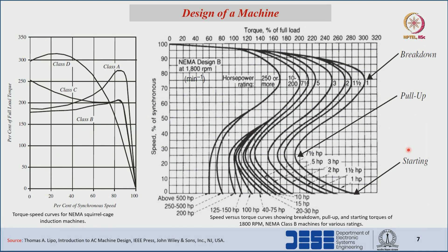Next, different NEMA design classes — class A, B, C, and D — are defined based on the percentage of full load torque for induction machines. Each class has different torque-speed characteristics. Class D provides the highest starting torque, so if a higher starting torque machine is required, we go with the class D type of design.